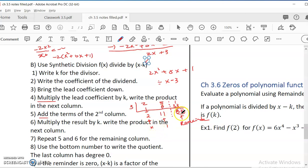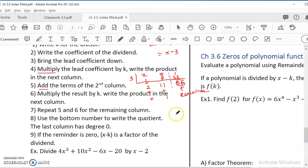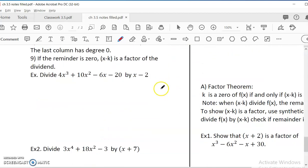The remainder is in the last column. And you start the process by bringing down the leading term. And the repeating process is always multiply the number at the bottom with the k outside of the division box. And then put the answer in the next column. And you add the two numbers. So let's do an example.